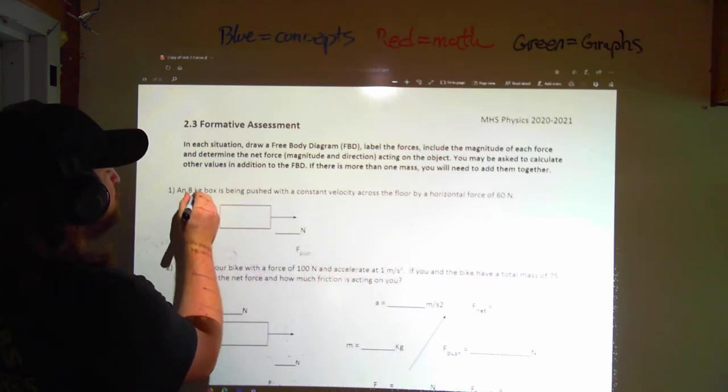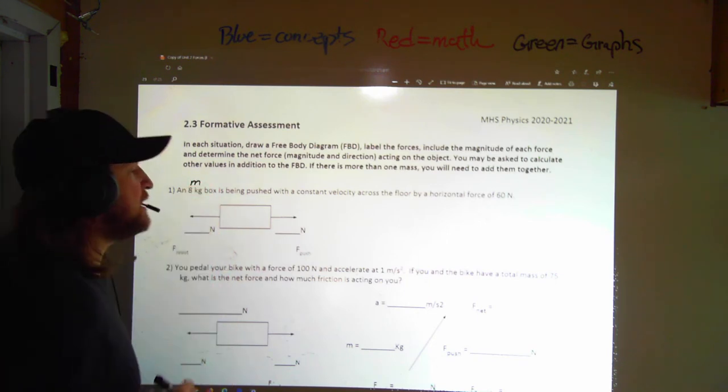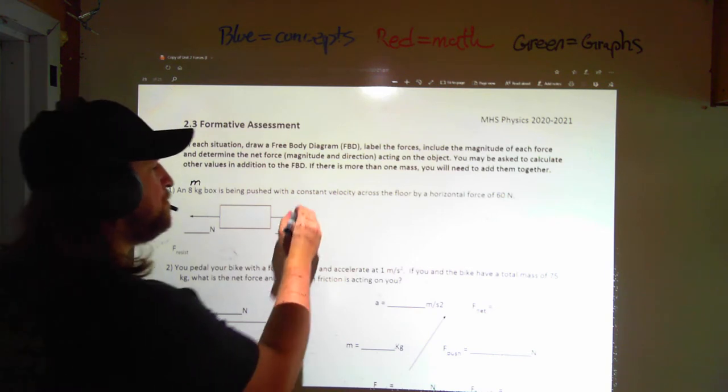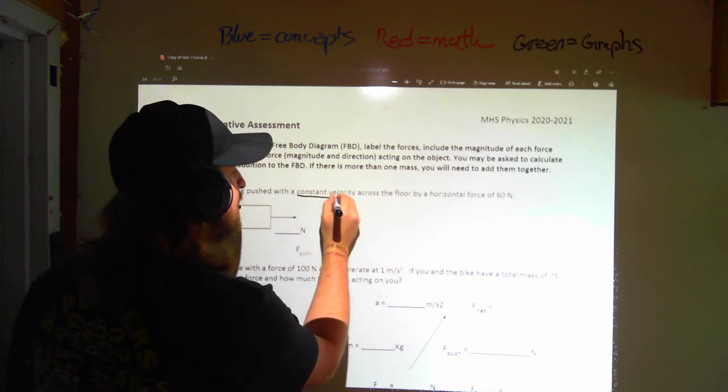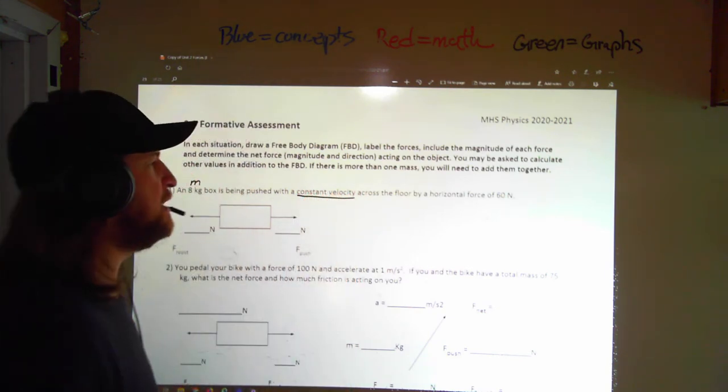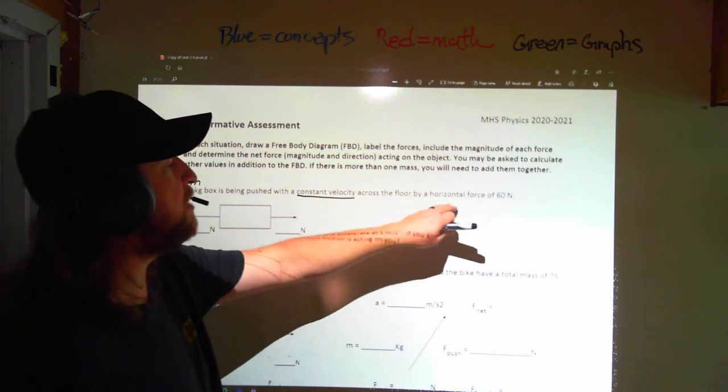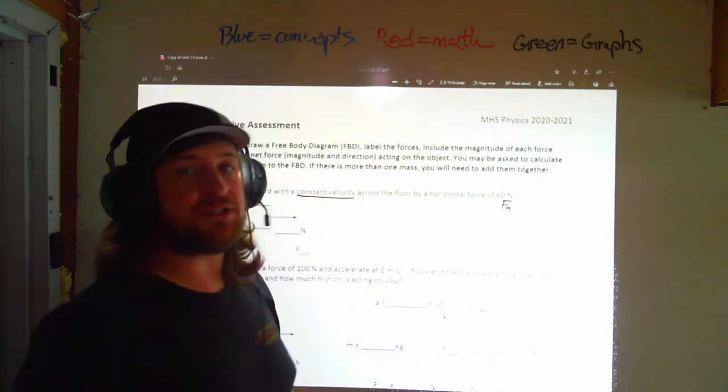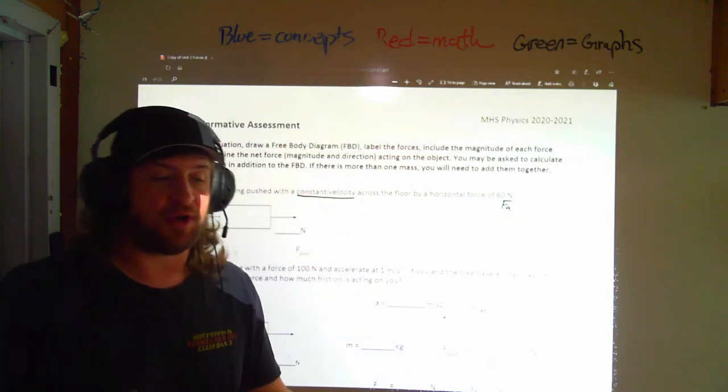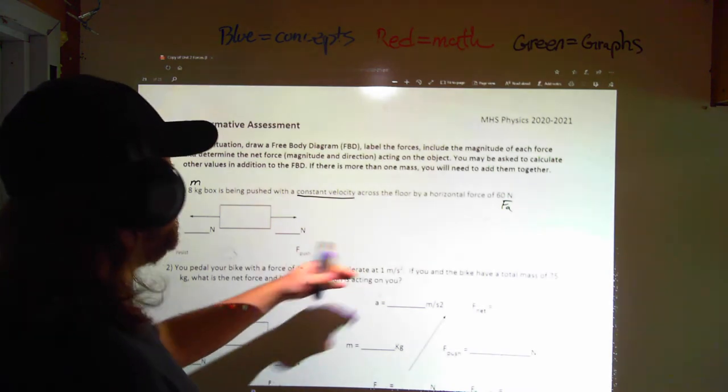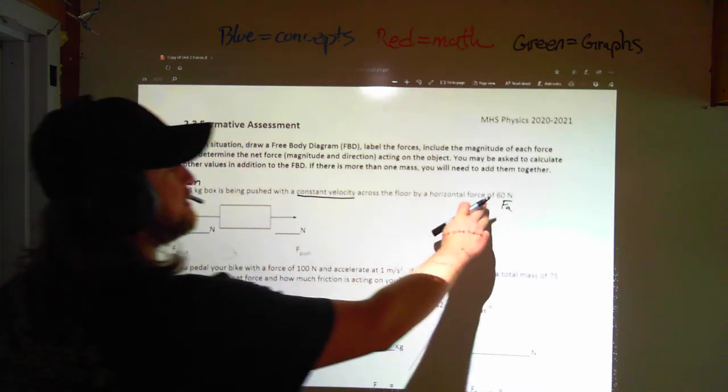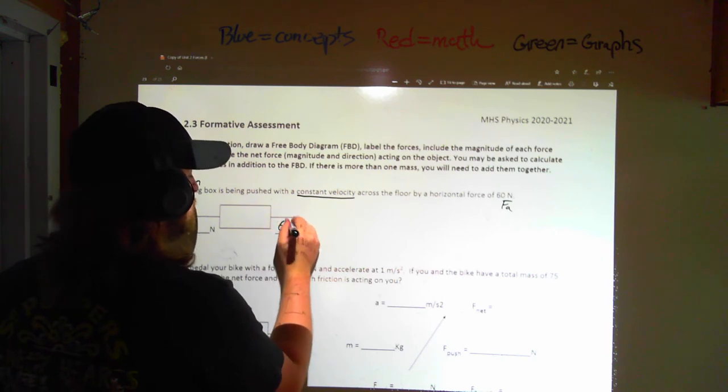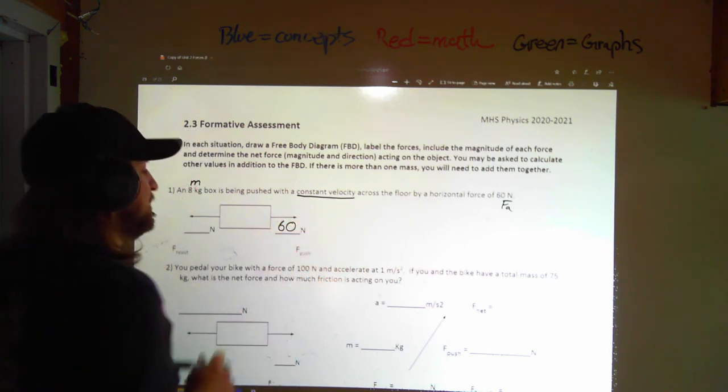We have an 8-kilogram box. I'm going to note my mass right there. It's being pushed with constant velocity. I feel like that might be important, so I'm going to underline it. Across the floor by a horizontal force of 60 Newtons. Well, a push in general when you're trying to make something happen, we're going to call FA, our applied force. So right here, I know I've got a 60 Newton force trying to make things happen.